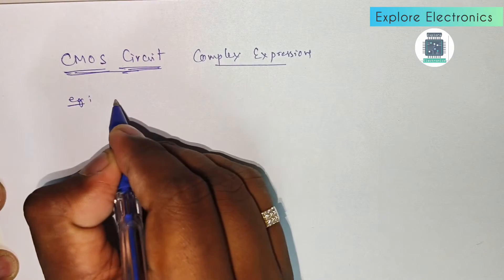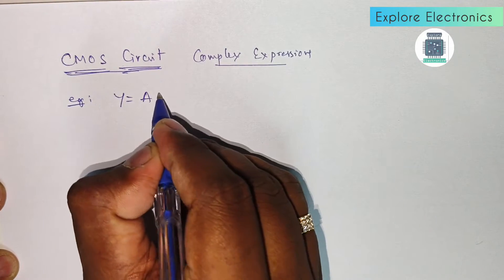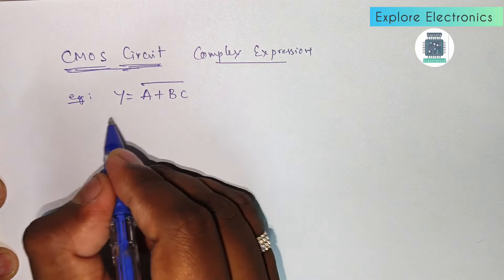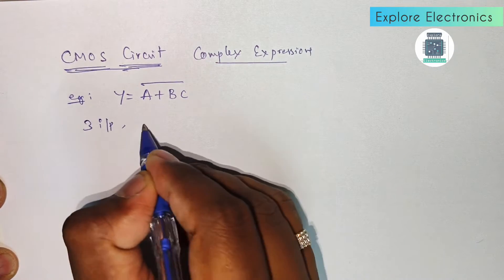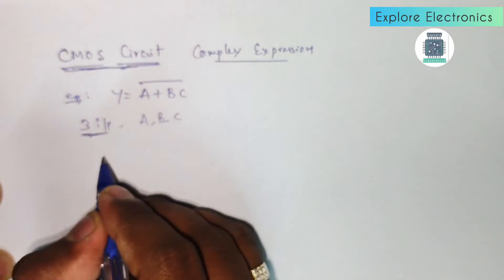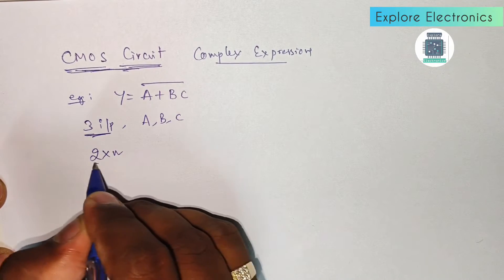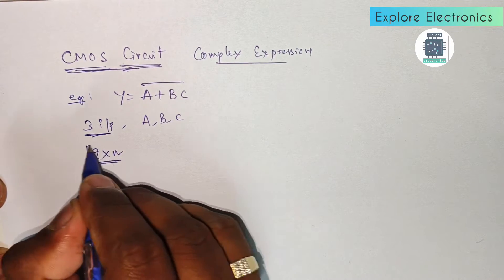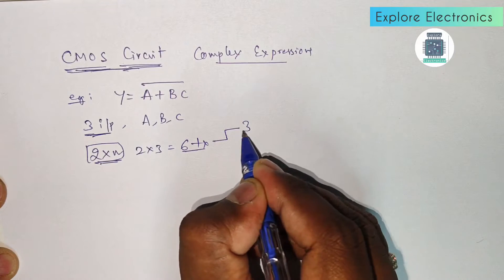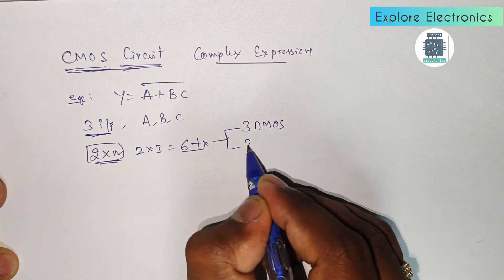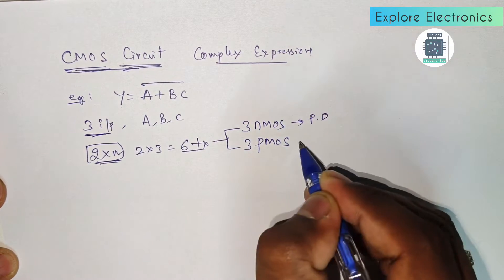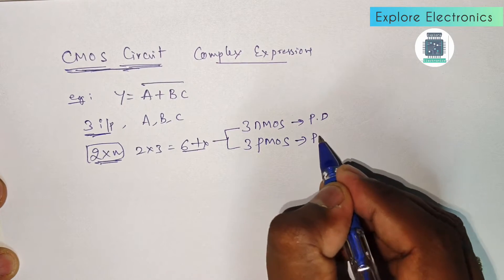The first example is y = (a + bc)̄. We have three inputs: a, b, and c. In CMOS logic we require two times the number of inputs as transistors, so two times three equals six transistors. Out of six, three NMOS transistors are required and three PMOS transistors are required.